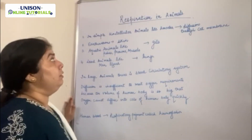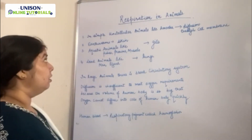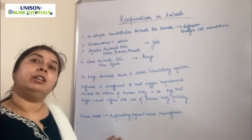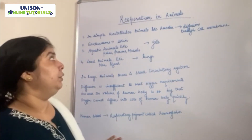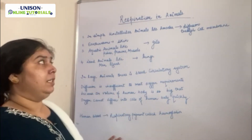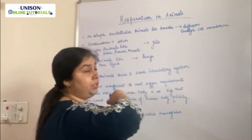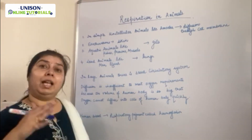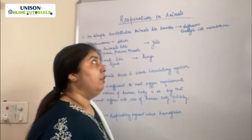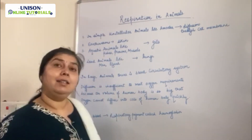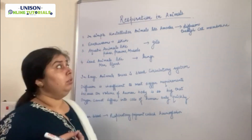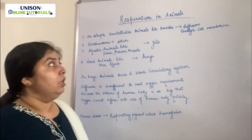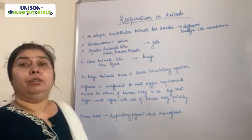Our next topic is how respiration actually takes place in animals. In simple unicellular animals where there is no division of labour and no specific organs defined, like amoeba, respiration takes place through the process of diffusion through the cell membrane. Oxygen comes in and carbon dioxide diffuses out. Because the size of amoeba is very small, oxygen doesn't have to travel large distances to each and every cell, so diffusion is quite enough for respiration.